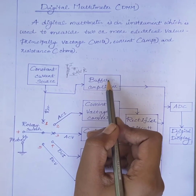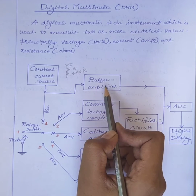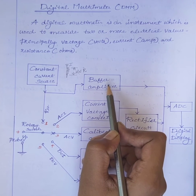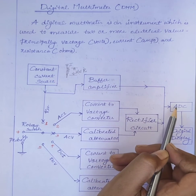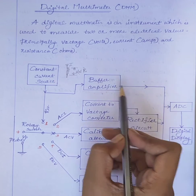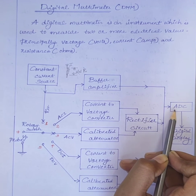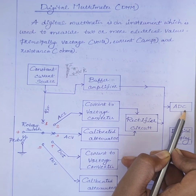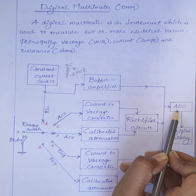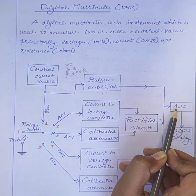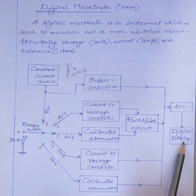This voltage is given to the buffer amplifier. The buffer amplifier provides electrical impedance transformation from one circuit to another. The output of the buffer amplifier is given to the analog to digital converter, which converts the analog signal to digital form and displays it on the digital display.